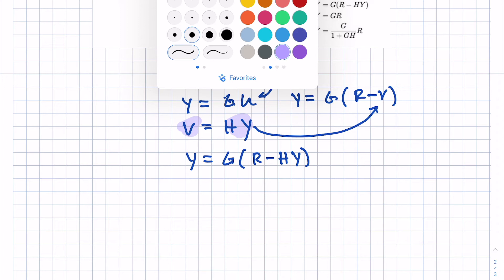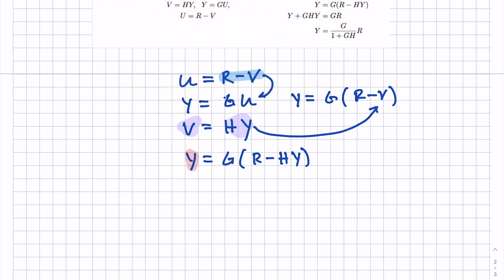I'll make this in red, the output signal Y and the input signal R. There's no other signals, the rest of these are transfer functions. In other words, I eliminated U and V because those were intermediate signals.